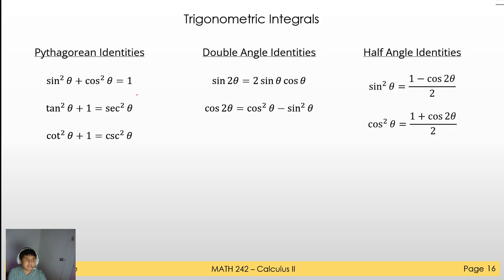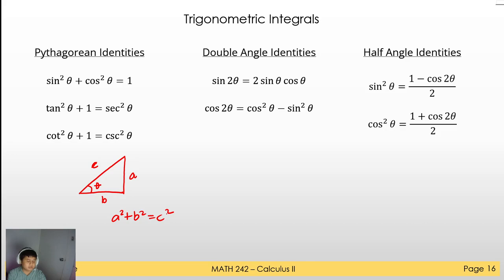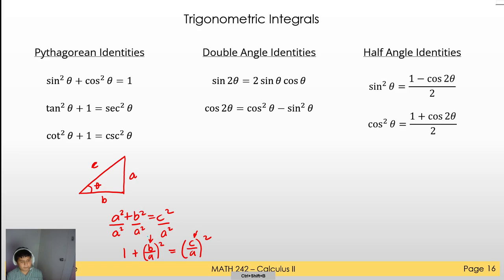For the Pythagorean identities, remember that given a triangle with angle theta, opposite side a, adjacent side b, and hypotenuse c, we have the relationship a² + b² = c². If we divide this by a², we get one plus (b/a)² equals (c/a)², and squaring those ratios gives us trigonometric functions.